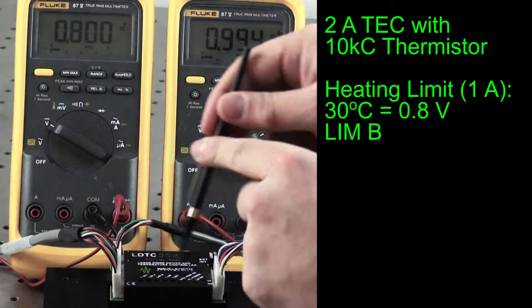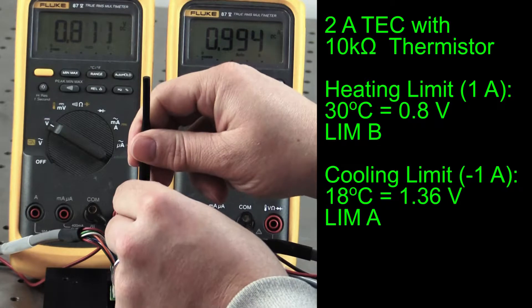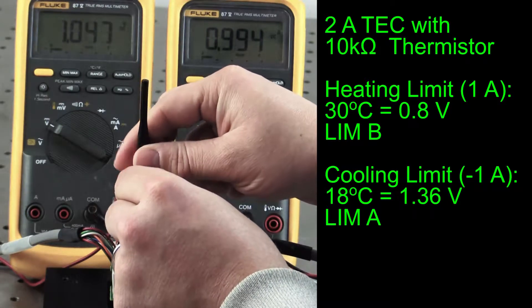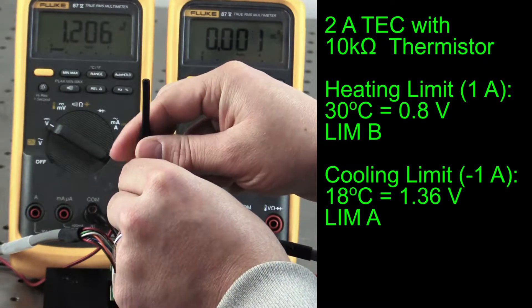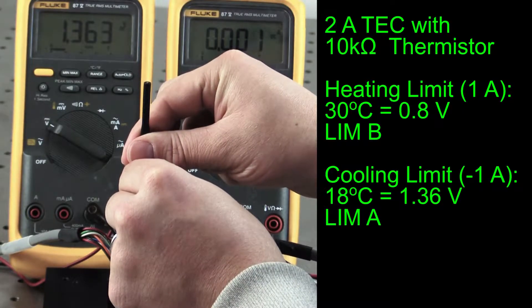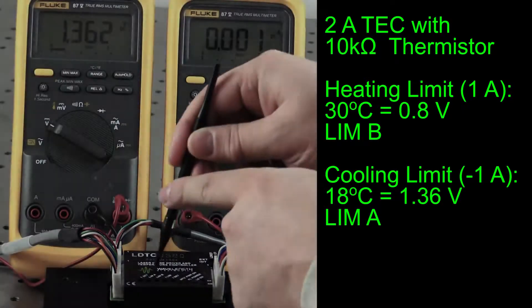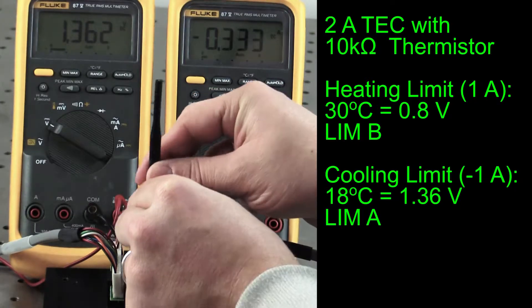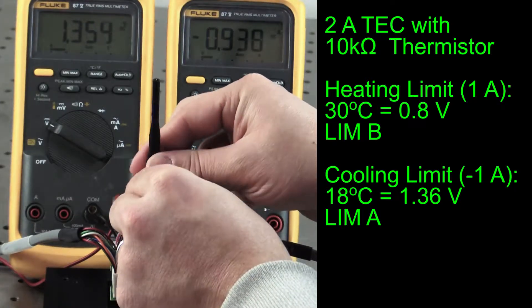Similarly, a set point below ambient is needed to configure the cooling current limit. Adjust the TSET trim pot such that the multimeter reads 1.36 volts, equivalent to 18 degrees C. Adjust the LIMBY trim pot until the voltmeter reads negative 1 amp.